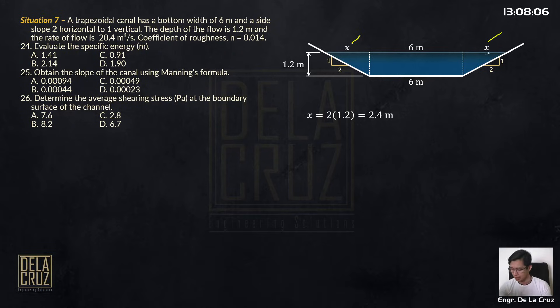If you have x, then the total top width of the trapezoidal flow is 6 plus 2x. 6 plus 2.4 is 10.8 meters. Then I will just solve this first.